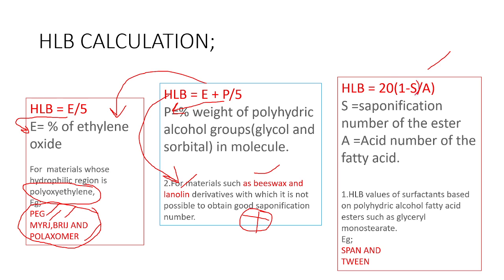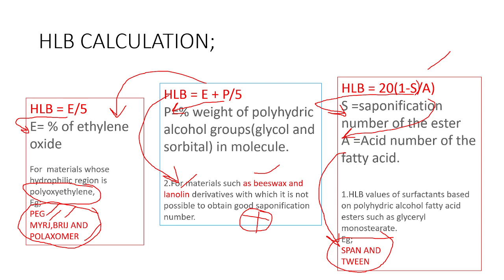The third formula is HLB = 20 × (1 − S/A), where S is the saponification number of the ester and A is the acid number of the fatty acid. This formula is used for surfactants which contain an ester group, with examples being Span and Tween.